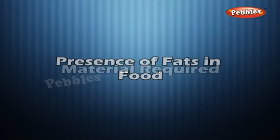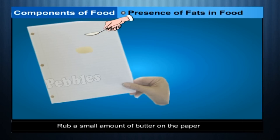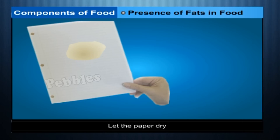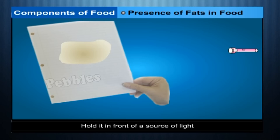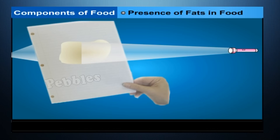Presence of Fats in Food — Materials required: Butter or a drop of oil, and a piece of white paper. Rub a small amount of butter on the paper or put a drop of oil on the paper. Let the paper dry. Hold it in front of a source of light. The paper becomes smooth, oily and less transparent — some light can pass through it. Note: Kerosene and petrol also make paper transparent, but these are not food materials and do not contain fat.